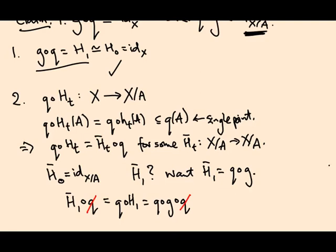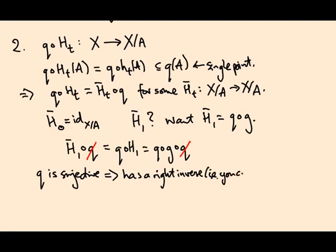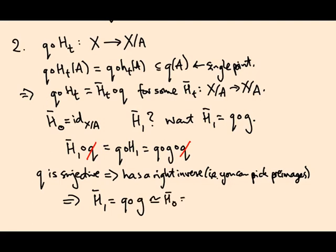We can cancel off the q's because q is surjective. It's the quotient map that sends a point to its equivalence class. So that has to be surjective by definition. And you can always cancel off a surjective map on the right. So it has a right inverse. It's not an invertible map, but it does have a right inverse. In other words, you can always pick a preimage. That's essentially what this is saying. So if two things agree after composing with this surjection on the right, then they agree. So this means h-bar-one equals q∘g. And that's homotopic to h-bar-zero, which is the identity on X/A. So we see that g and q are homotopy inverses.